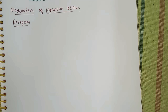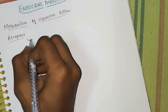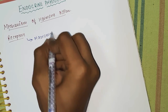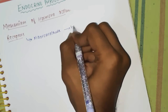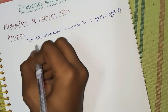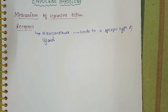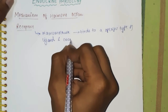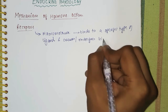First, you have to know what receptors are. Receptors are macromolecules which bind with a particular ligand and undergo biological changes in our body. They bind to a specific type of ligand, and after binding they create some biological changes in our body.